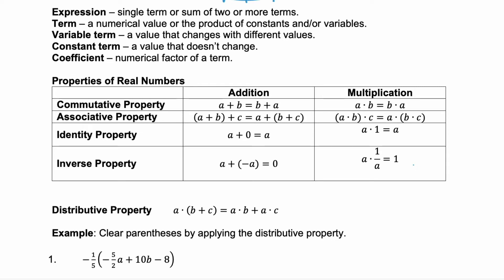And then the property we're going to use the most in this section is the distributive property which says you distribute this a through the parentheses to the two terms inside. So you get a times b plus a times c.